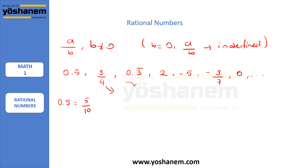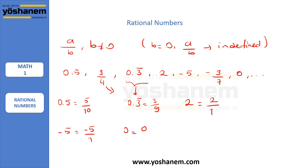Let's look at 0.3 repeating — we can write it as 3 over 9. The number 2 is 2 over 1. Negative 5 is also negative 5 over 1, and 0 is 0 over 1. So as you can see, rational numbers include whole numbers, integers, decimal numbers, and repeating decimals.